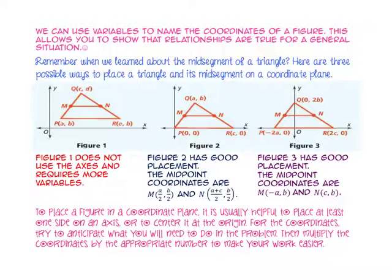We can use variables to name the coordinates of a figure. This allows us to show that relationships are true for a general situation. Remember when we learned about the mid-segment of a triangle? Here are three possible ways to place a triangle and its mid-segment on a coordinate plane. Figure 1 does not have very good placement because it does not use either of the axes, so it requires more variables.